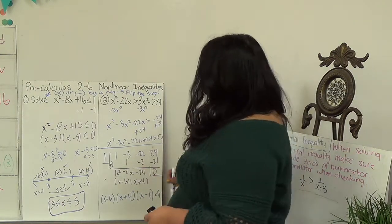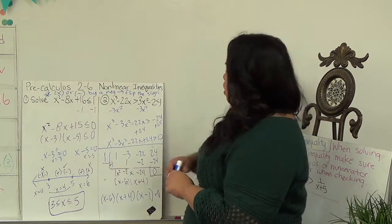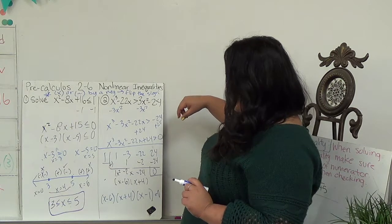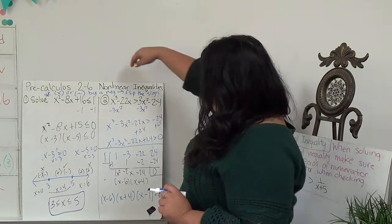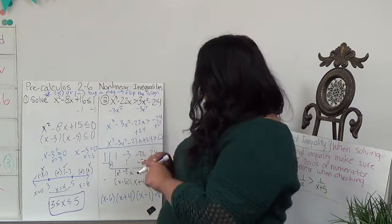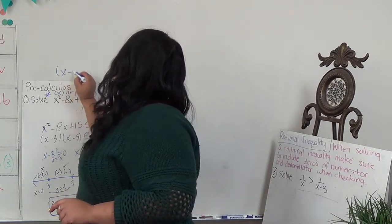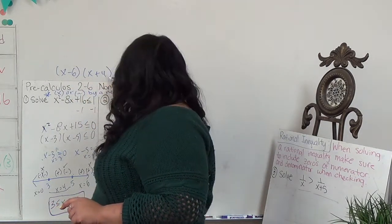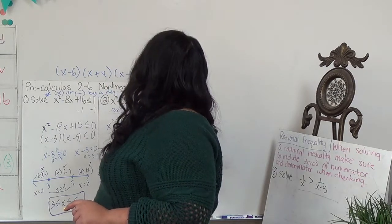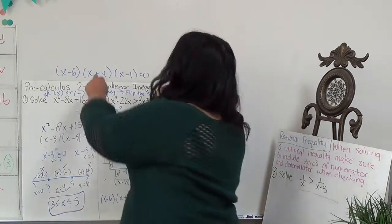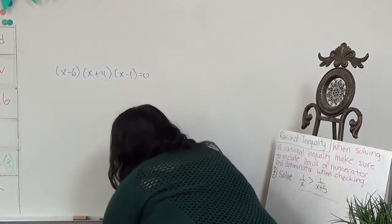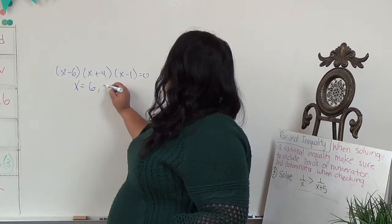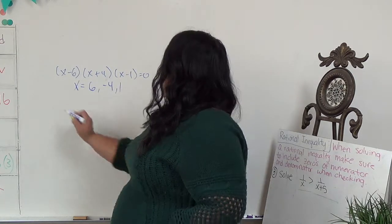So my three factors are x minus 6, x plus 4, and x minus 1, giving markers at x equals 6, x equals negative 4, and x equals 1. Since the inequality is greater than 0, I'm looking for regions where the product is positive.